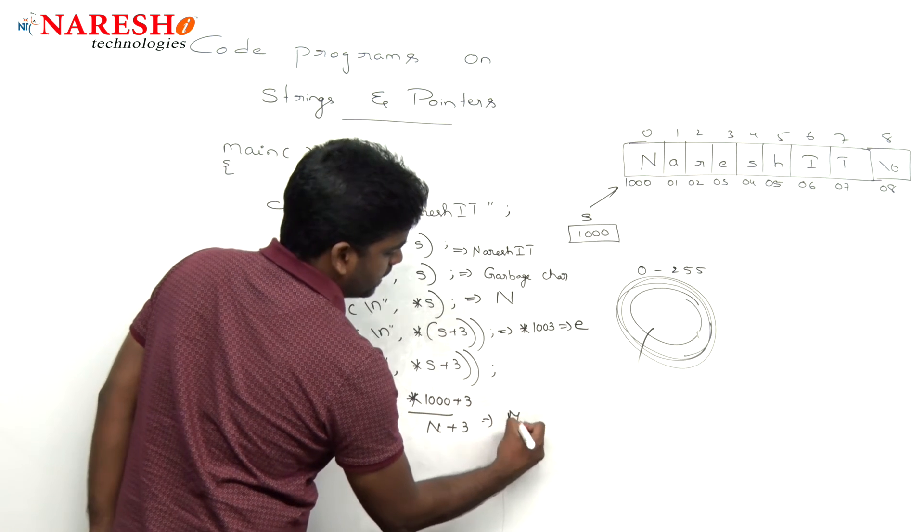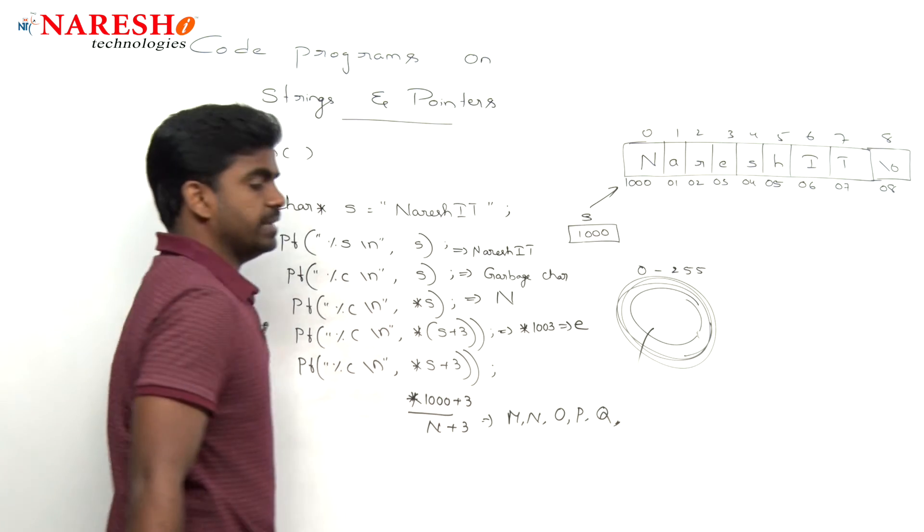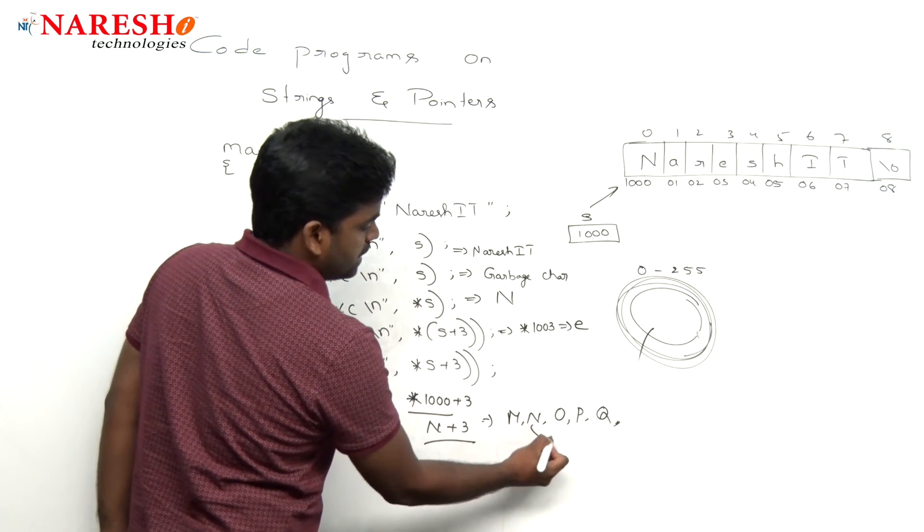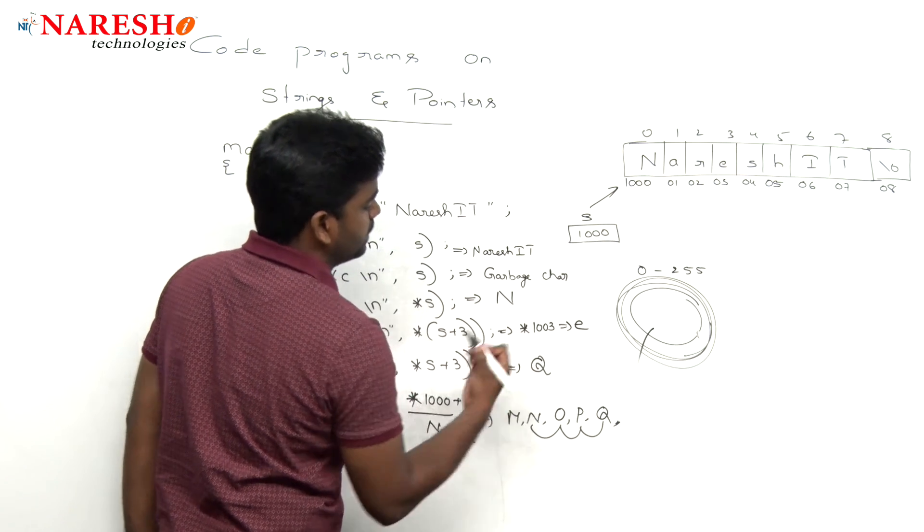Here it is M, N, O, P, Q - ASCII values. Here N plus 3 means plus 1, plus 2, plus 3. Capital Q will display.